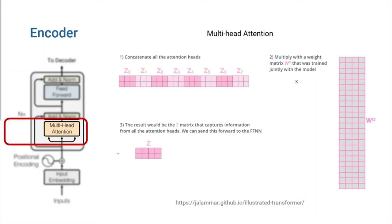This leaves us with a bit of a challenge. The feed-forward layer is not expecting eight matrices. It's expecting a single matrix, a vector for each word. So we need a way to condense these eights down to a single matrix. How do we do that? We concat the matrices, then multiply them by an additional weights matrix, w-o. This wraps up everything on multi-head self-attention mechanism. If you are willing to read more about it, check out Jay Alamar's great post about transformers. I have used a lot of his material in these slides.